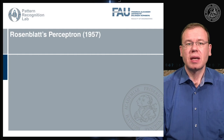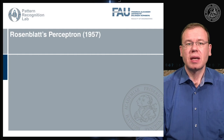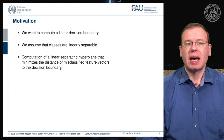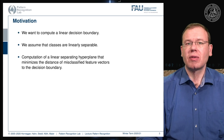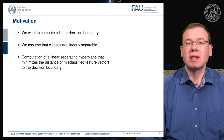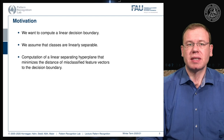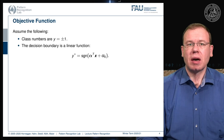Let's start looking into the Rosenblatt perceptron. This was already developed in 1957 and the main idea is that we want to compute a linear decision boundary. We assume that the classes are linearly separable, and then we are able to compute a linear separating hyperplane that minimizes the distance of misclassified feature vectors to the decision boundary.